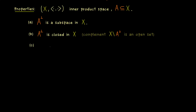We could also ask if taking the closure of A changes anything in the orthogonal complement. The answer is no — we still get out A⊥. Similarly, we could ask if going to the linear subspace spanned by A changes anything. Even though the span might be bigger than A, the orthogonal complement does not change — we still get out the same A⊥.